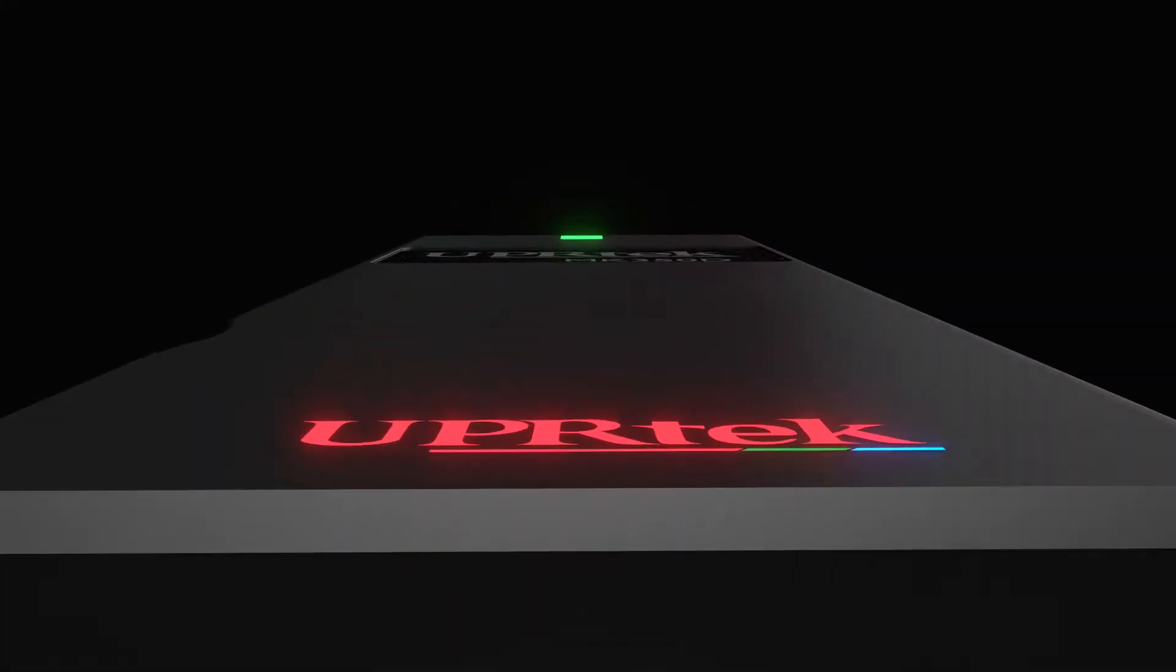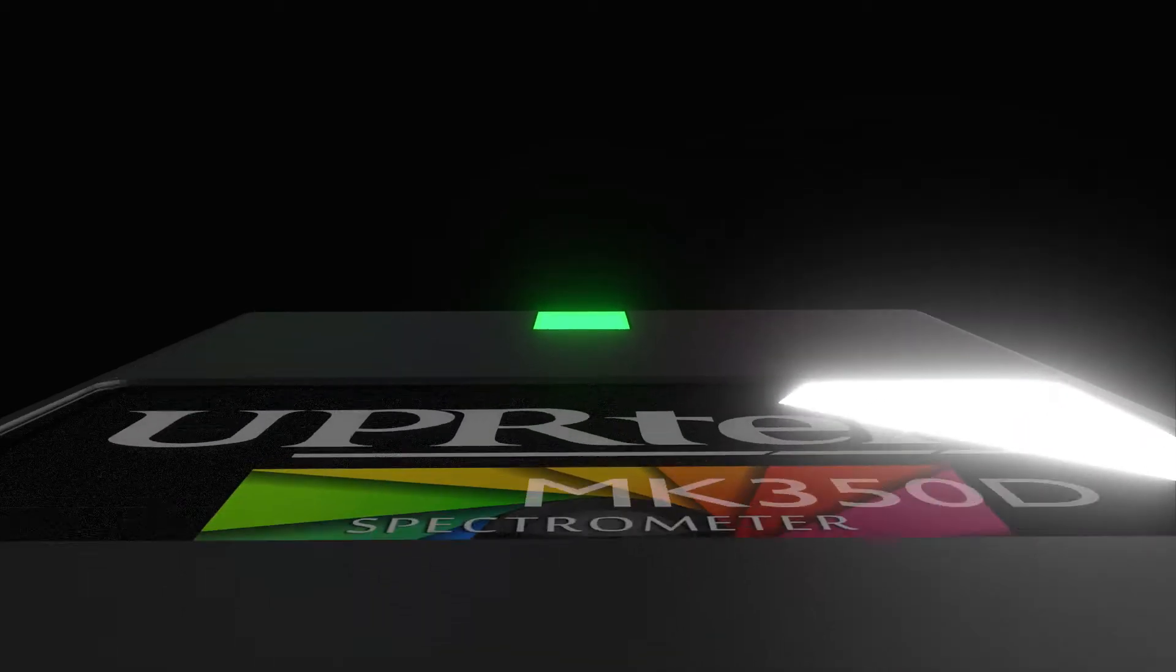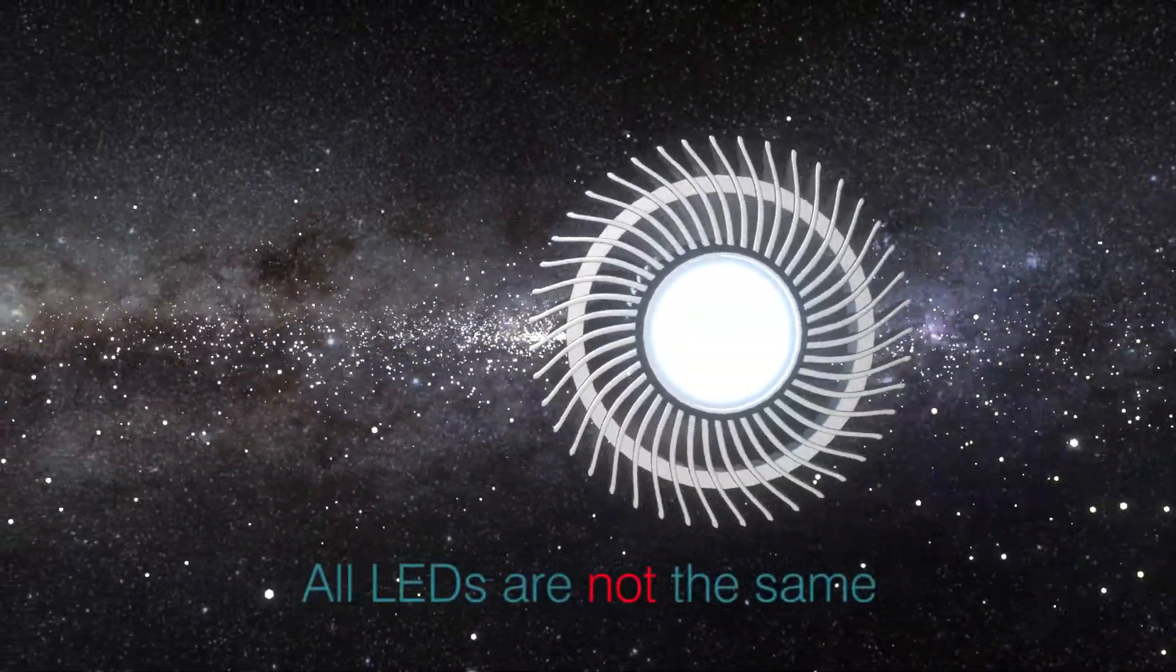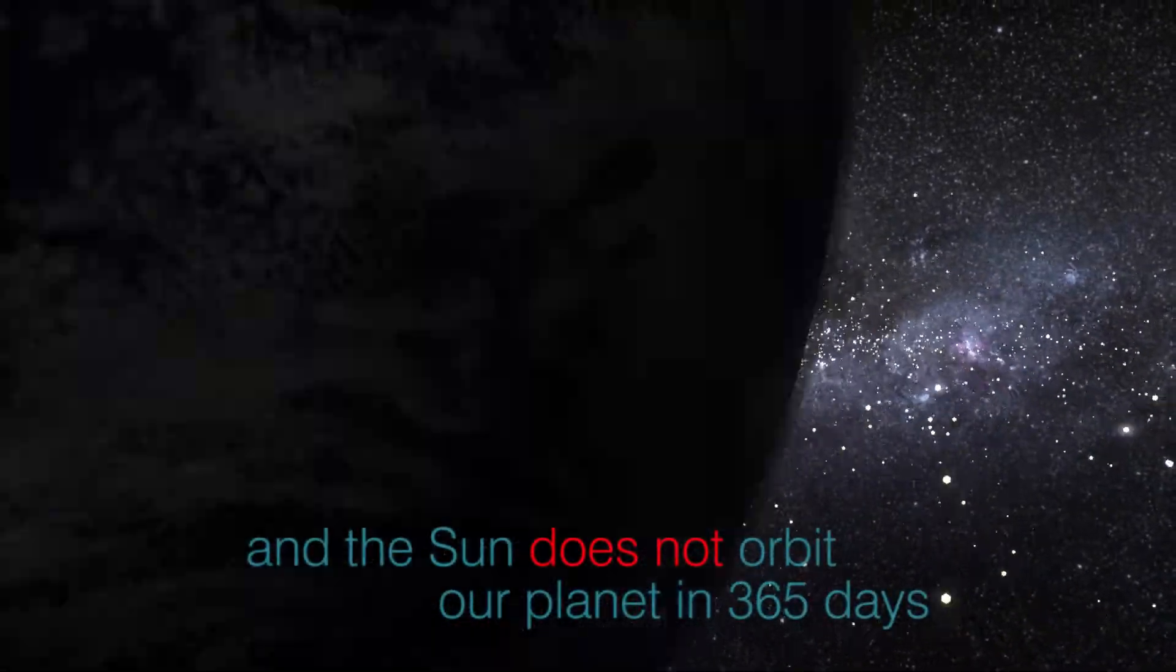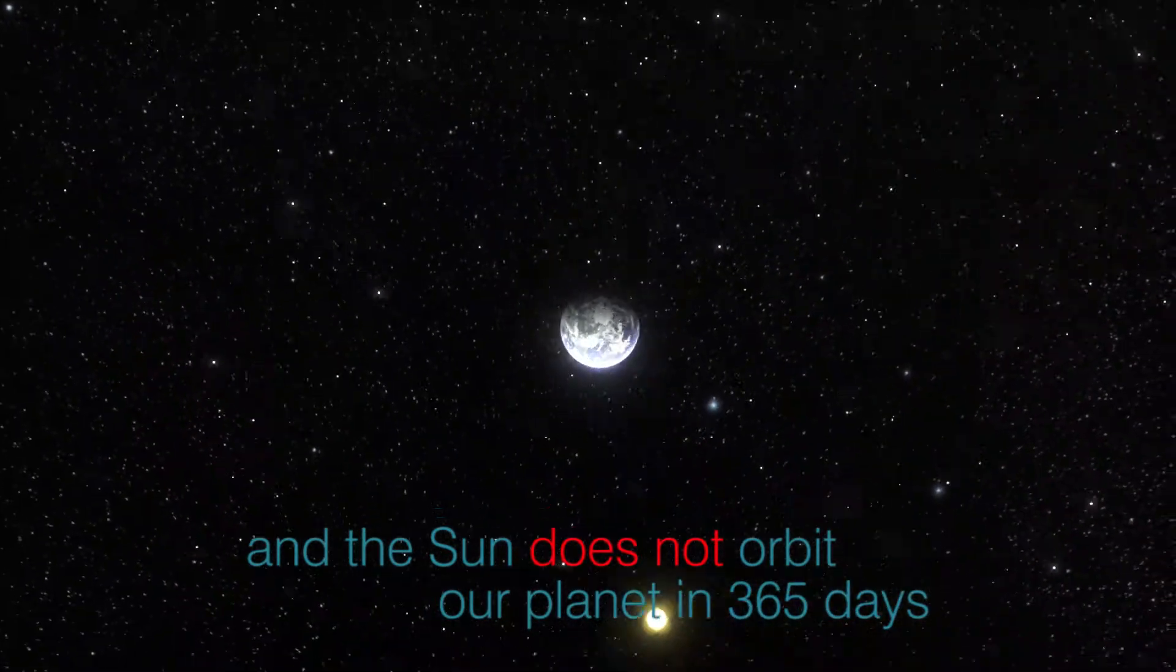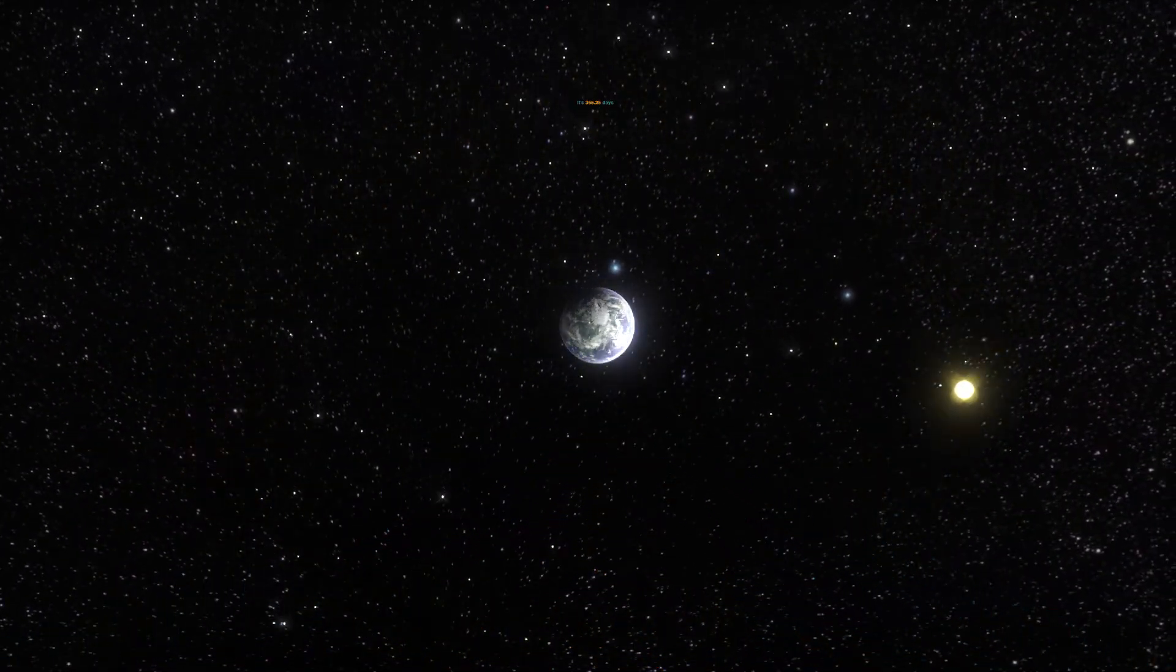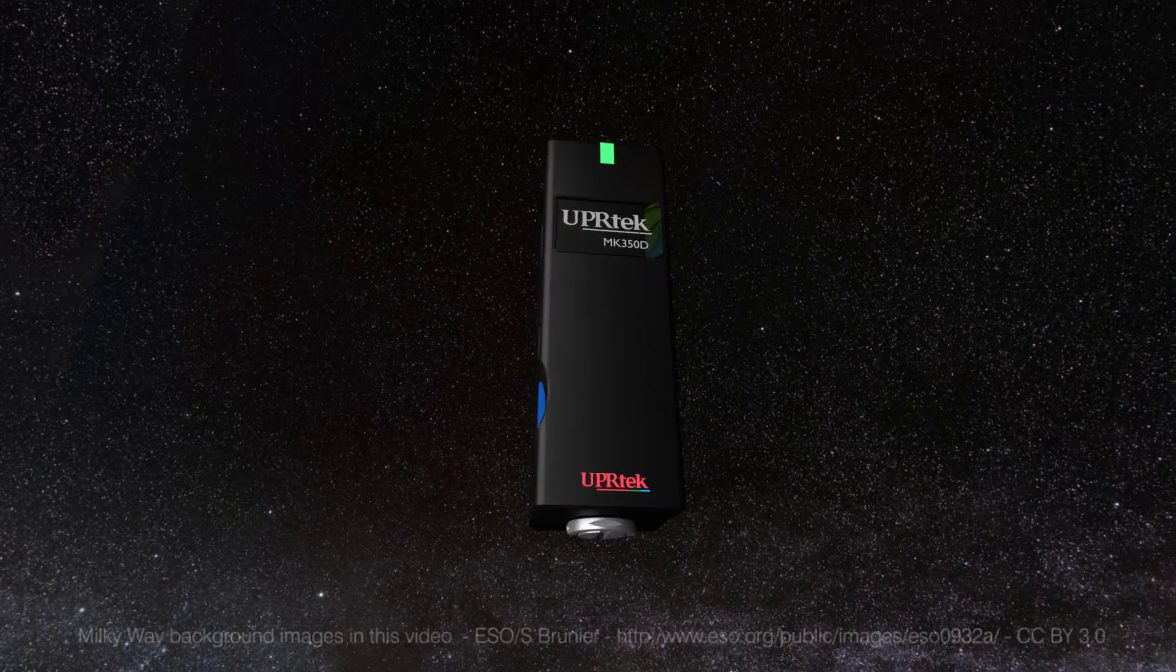Well, actually no. The compact MK-350D is not too much to ask for. The compact MK-350D, because all LEDs are not the same, and the Sun does not orbit the Earth in 365 days. It's 365.25 days, actually.